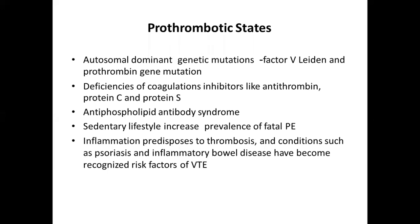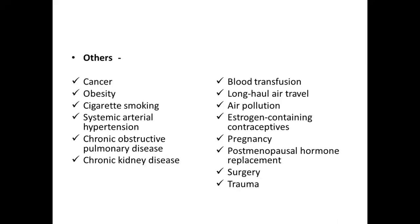In which patients does DVT occur? In patients who have a prothrombotic state, such as those with autosomal dominant genetic mutations like Factor V Leiden or prothrombin gene mutation, or deficiencies of coagulation inhibitors like antithrombin, protein C, or protein S, or antiphospholipid antibody syndrome. Even patients with a sedentary lifestyle have increased risk. Patients with chronic inflammation such as psoriasis and inflammatory bowel disease also have a high risk of venous thromboembolism.